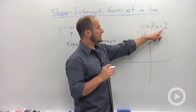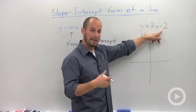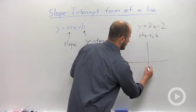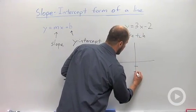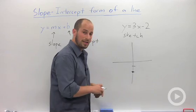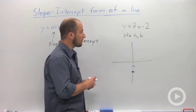Our y-intercept is negative 2, so basically that means we go down the y-axis two units: 1, 2. There's our starting point, and from there we know that our slope is 3.